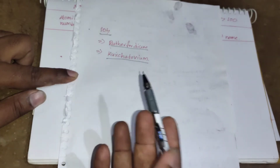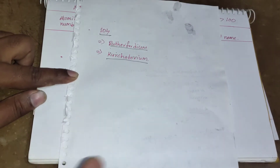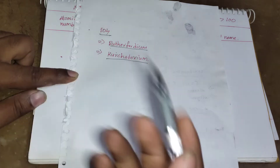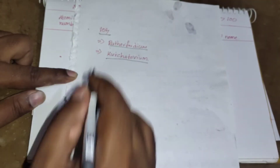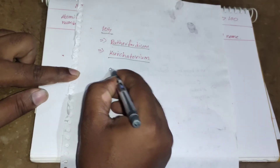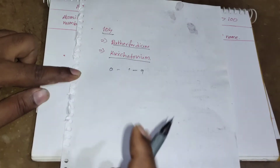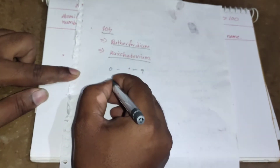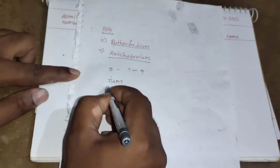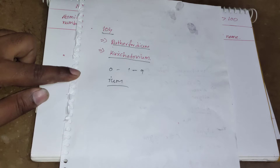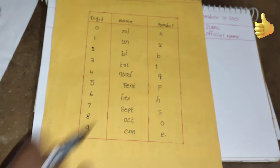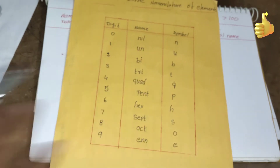To avoid these problems, the IUPAC nomenclature system developed new rules for elements with atomic number greater than 100. They assign root words for the digits zero through nine and add the ending '-ium' to form the element name, along with a corresponding symbol.